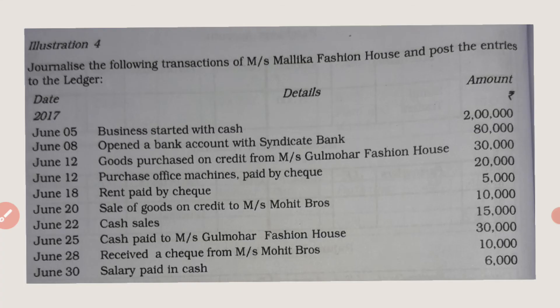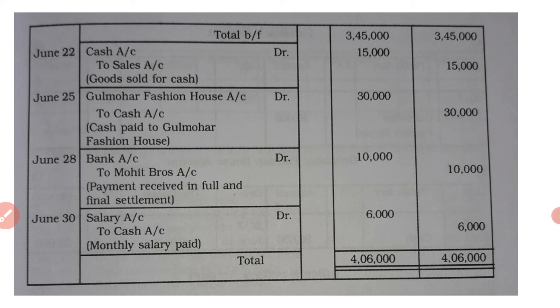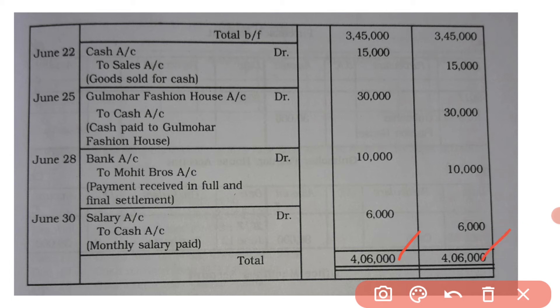Last transaction of the month, June 30: salary paid in cash — salary account debited to cash account. Payment made means it is an expense, and expenses are always debited. Debit 6,000, credit 6,000. Narration: being monthly salary paid. After all transactions are complete, the total debit and credit amounts are 4,06,000 each — both sides must be equal. This completes the journalizing.